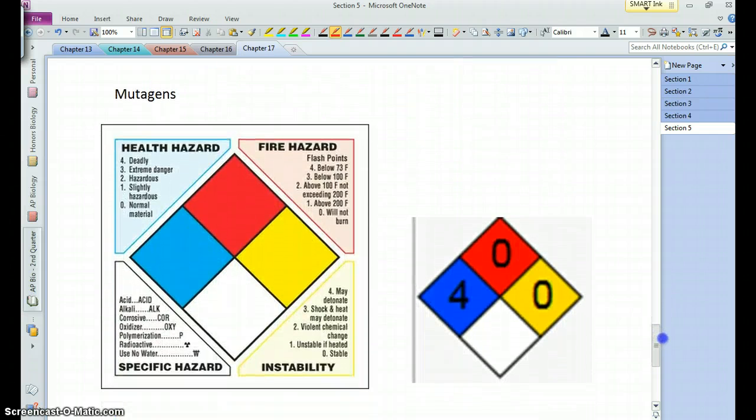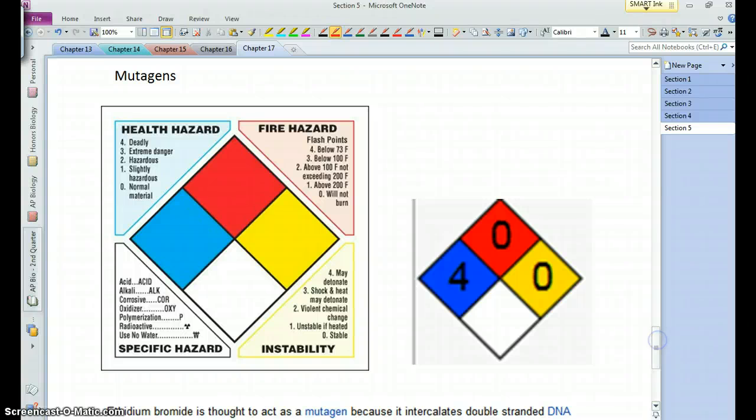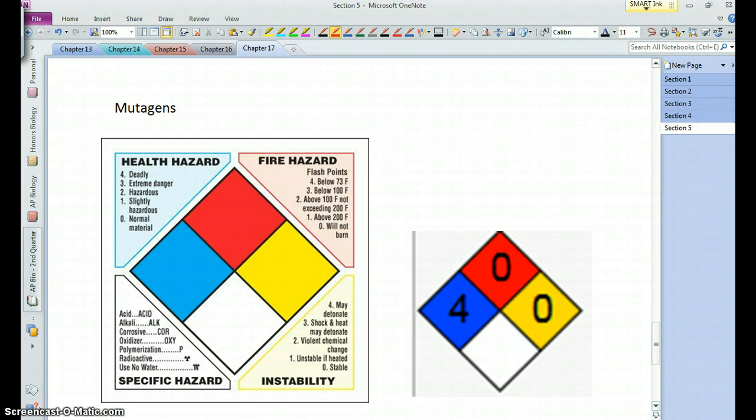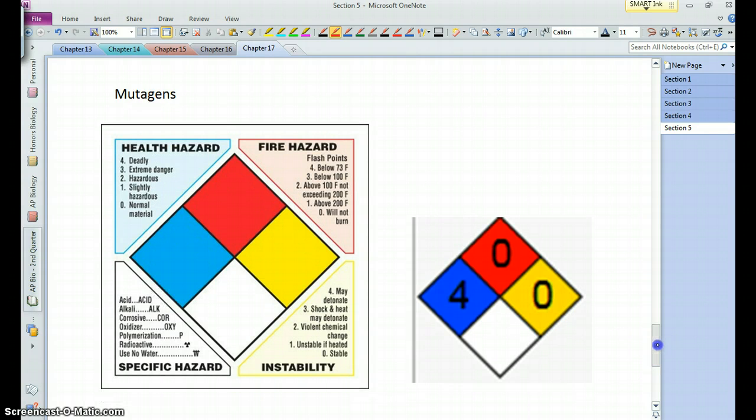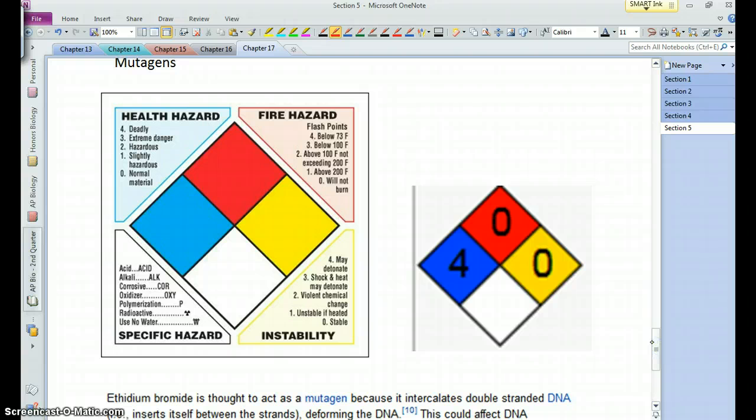There are particular compounds that are known to be mutagenic, and that is they cause changes to the DNA. You may have seen these symbols before. They show them on particular chemicals when you buy them, or you might even sometimes see it on trucks traveling down the road. In the boxes, the blue is health, red is fire, yellow is instability. The higher the number, the more risky it is.